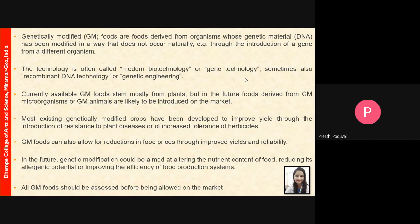Genetically modified foods are derived from organisms whose genetic material — the DNA — has been modified in a way that does not occur naturally. This is not a process of natural selection or natural breeding; it specifically involves extracting genes that confer advantages and adding them to form a superior breed. This is done through introduction of a gene from a different organism and is a key part of modern biotechnology, also known as recombinant DNA technology or genetic engineering.